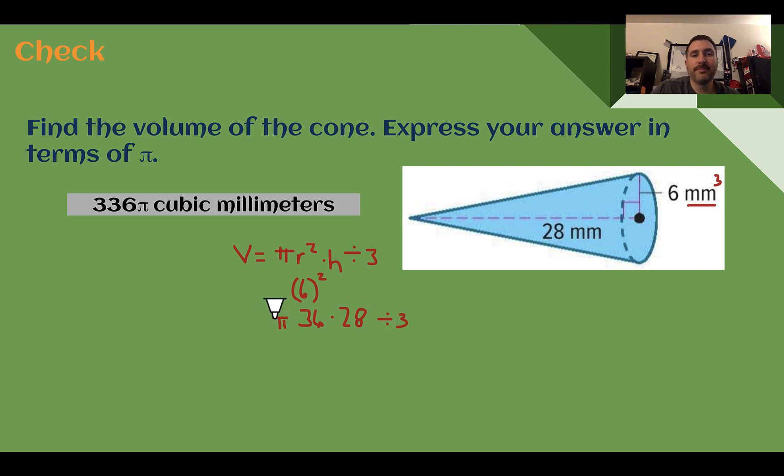And also with the pi, I'm going to use the commutative and associative properties to swing some of these things around. So instead of multiplying by 28 and then dividing by three, I'm going to take 36 divided by three and get 12. And then 12 times 28 ends up being 336. And since it says in terms of pi, I can just leave my pi symbol. So 336 pi cubic millimeters was my answer.